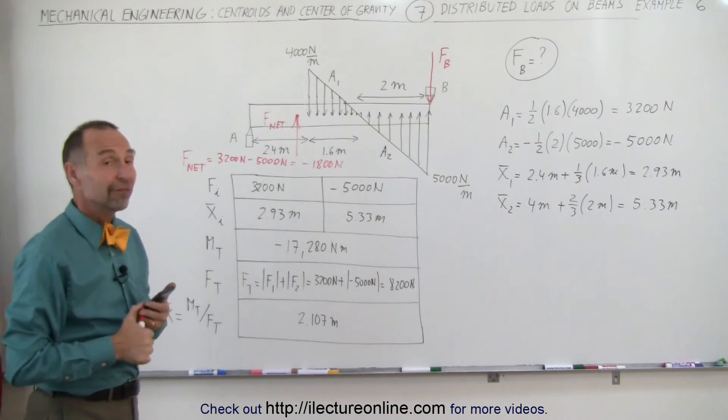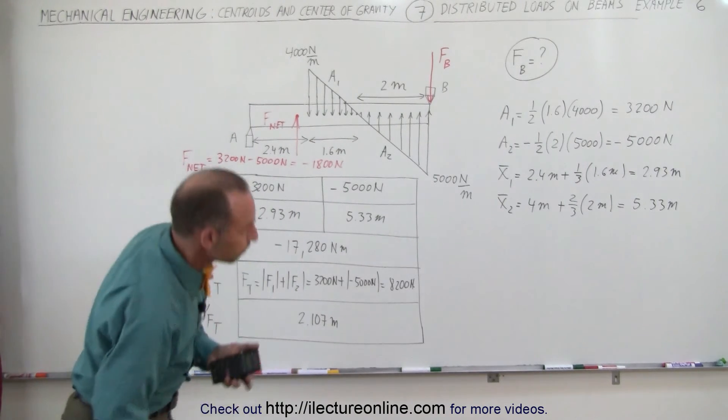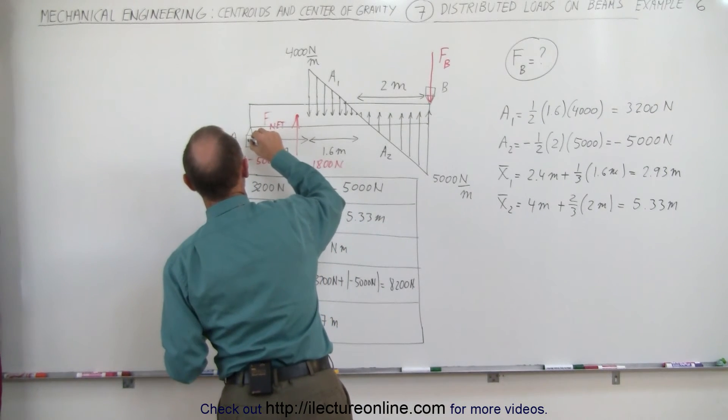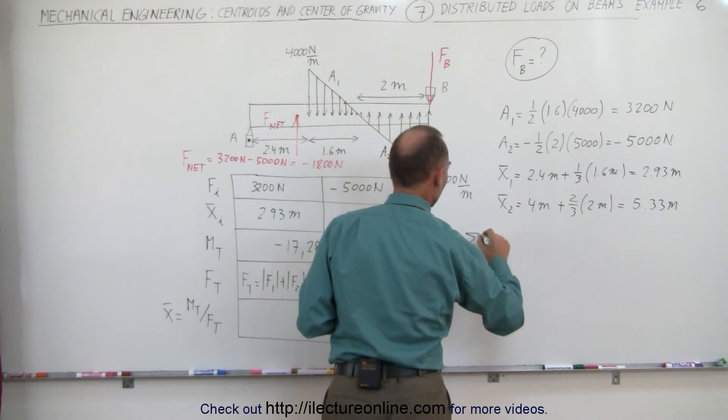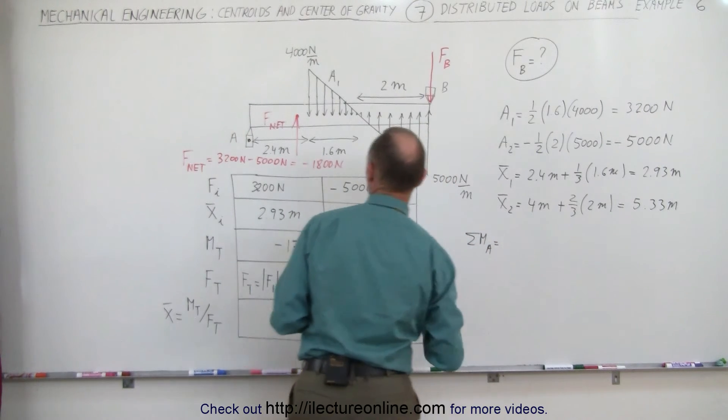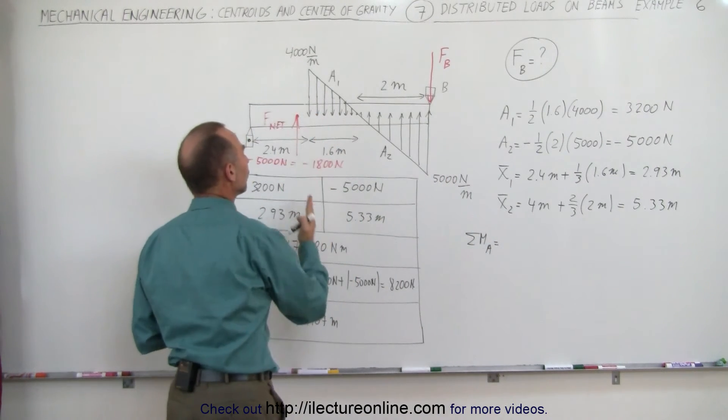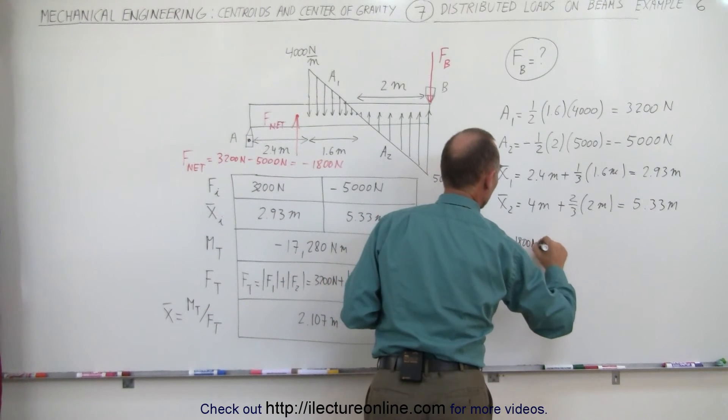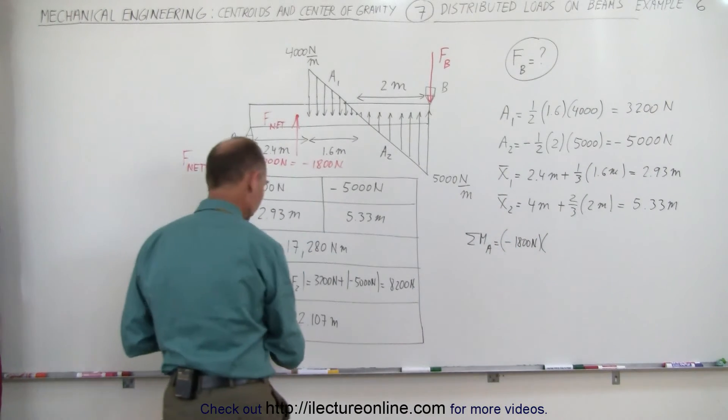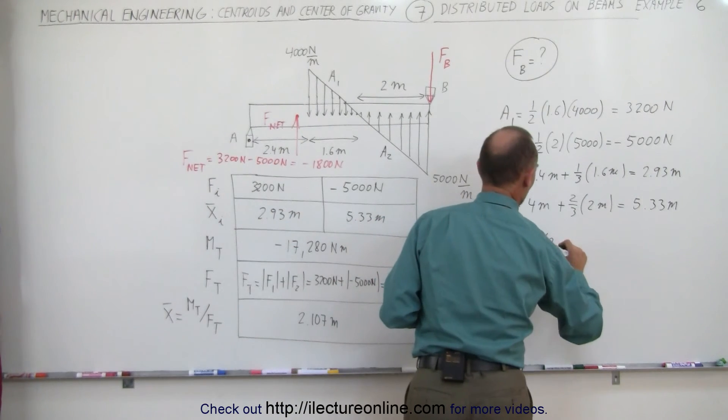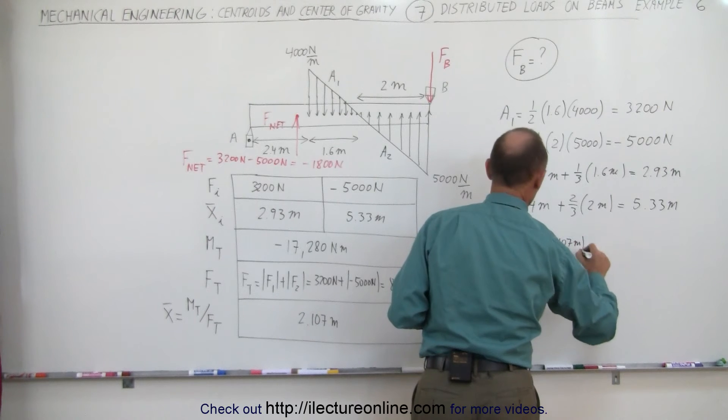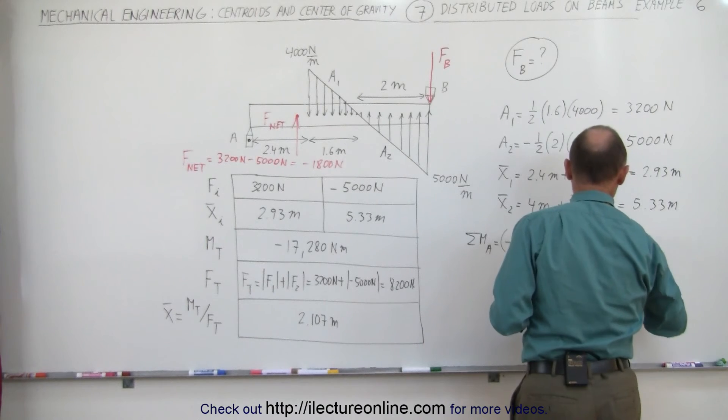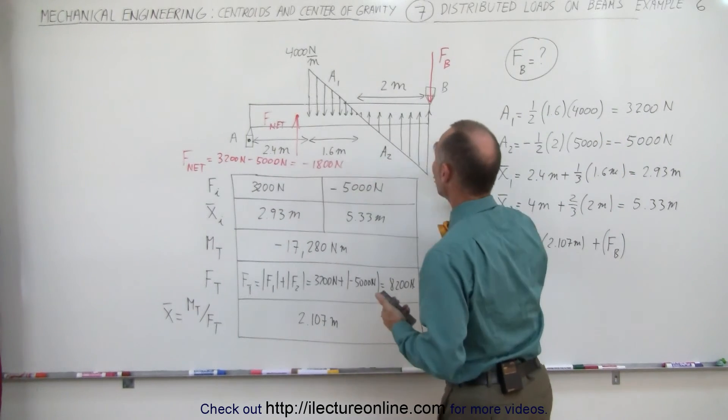Now, to find the force at B, we start at point A. We call that our reference point for the moment. The sum of all the moments at point A is equal to: we have a minus 1,800 newton force pushing upward, minus 1,800 newtons, multiplied times the x-coordinate of the centroid, 2.107 meters, plus, because B is acting in downward position, F sub B, acting at a distance of the length of the beam at 6 meters.